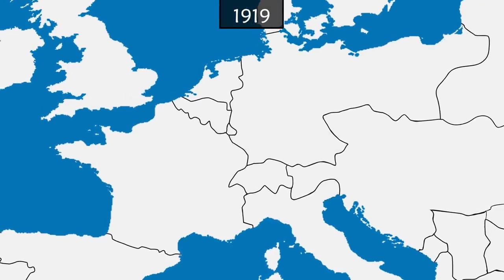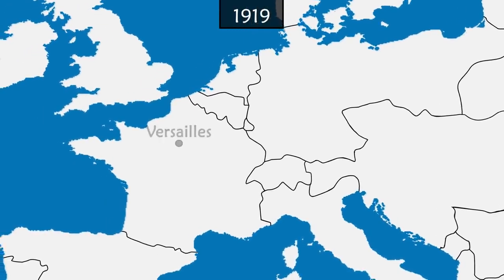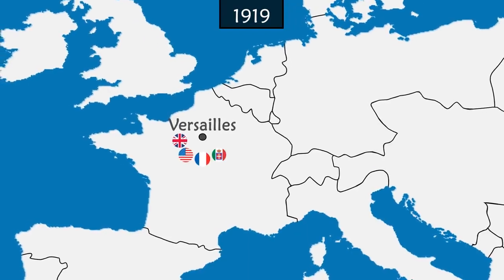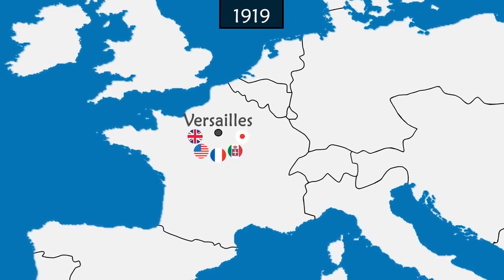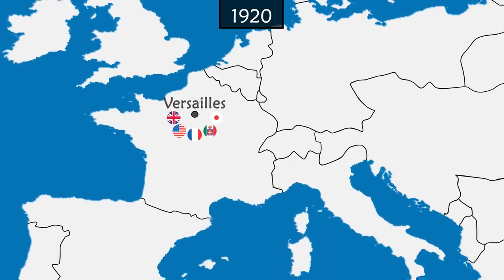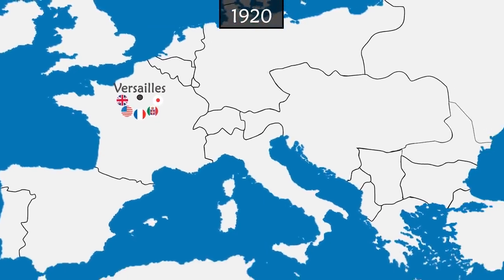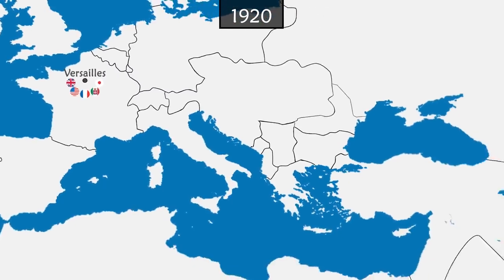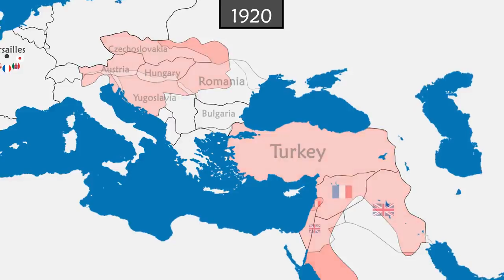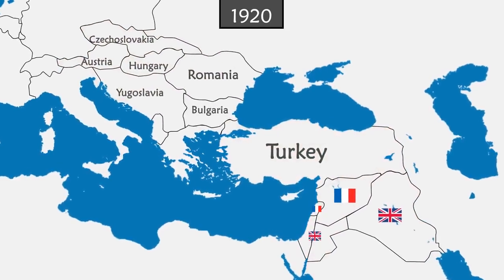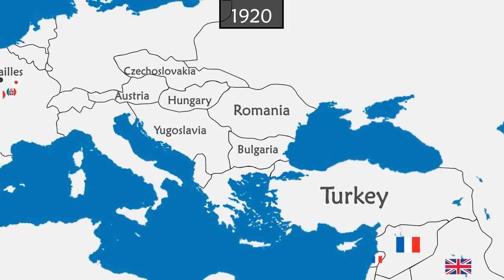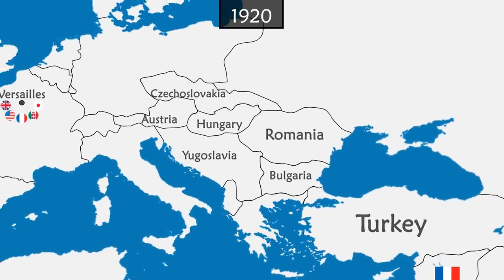On June 28th, 1919, a peace treaty is signed at Versailles. German representatives are not invited and the country is forced to accept all demands of the victors. Germany and its allies are held solely responsible for war damages and must pay heavy compensation. Austria-Hungary and the Ottoman empires are dismantled, making way for new countries or colonies. Germany finds itself humiliated and indebted.